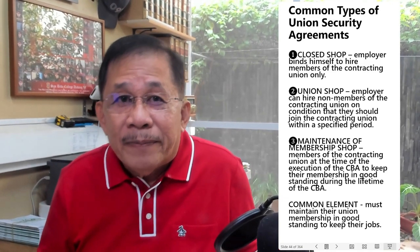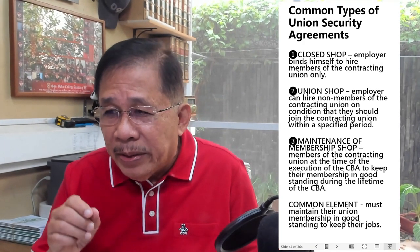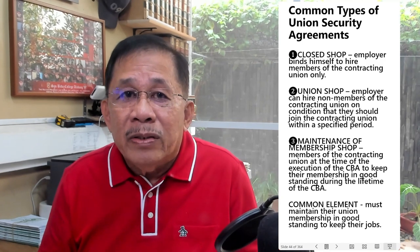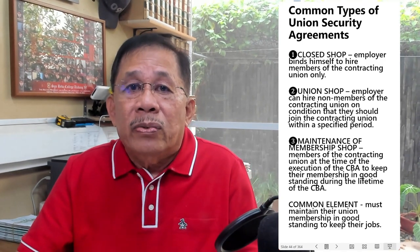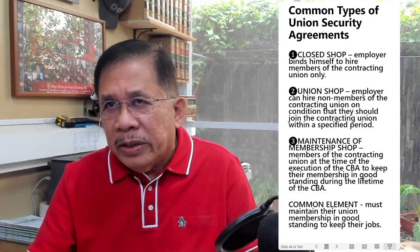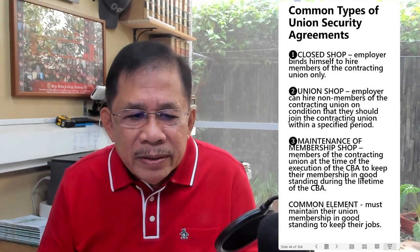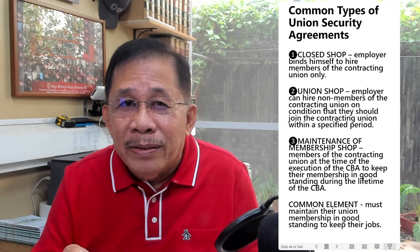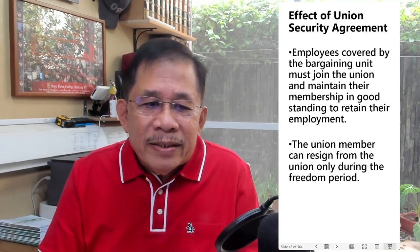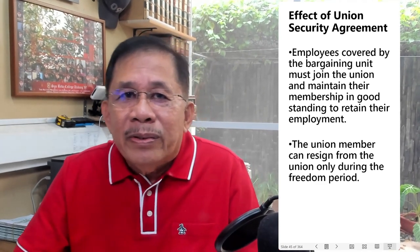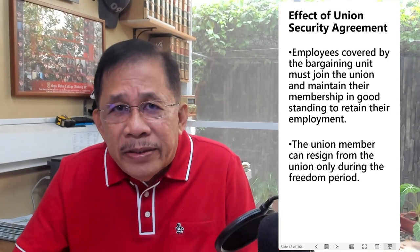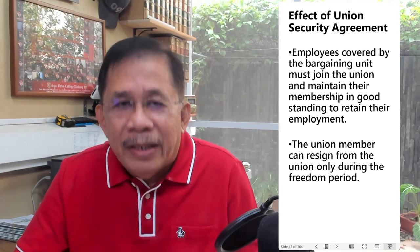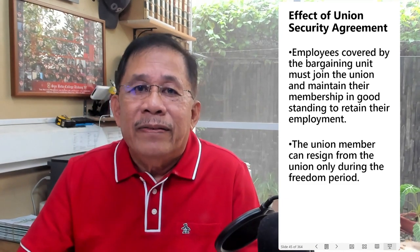In maintenance of membership, the agreement is for the employees who are already members of the union at the time of the signing of the CBA to keep their membership in good standing during the lifetime of the CBA to keep their jobs. You will notice that in these union security agreements, there is always a condition: to maintain their membership in good standing as a condition for their employment. If there is a union security agreement, the employees covered by the bargaining unit must join the union and maintain their membership in good standing to retain their employment.